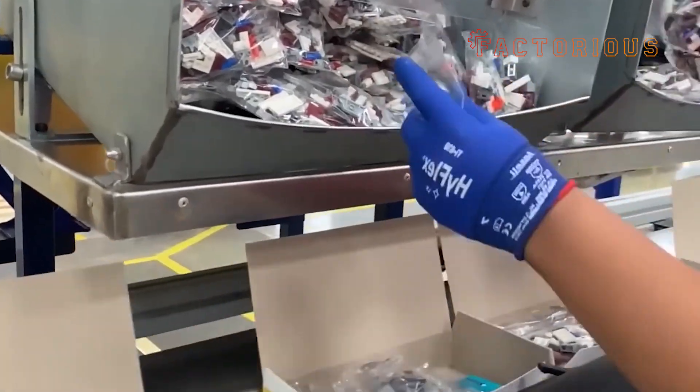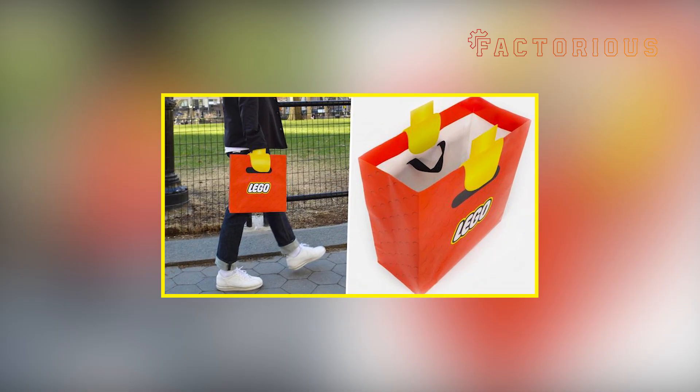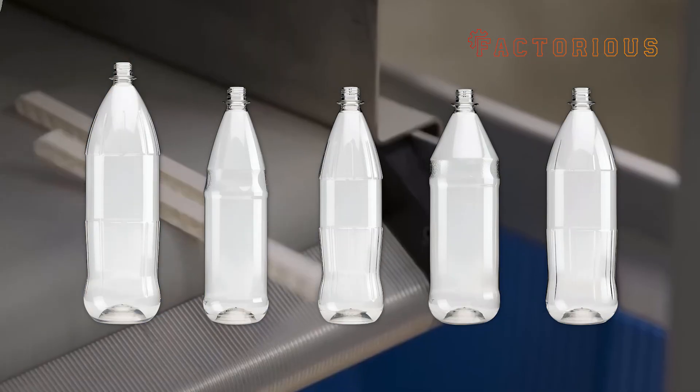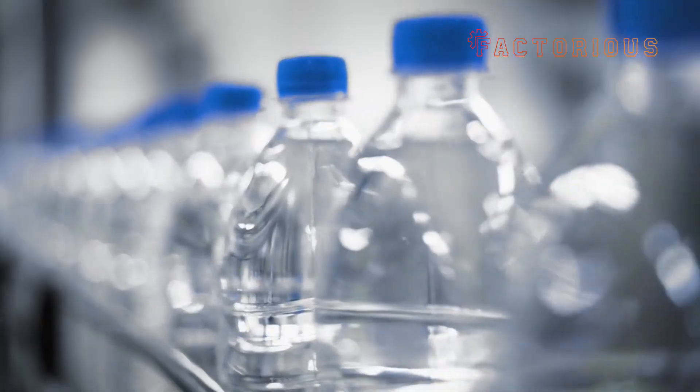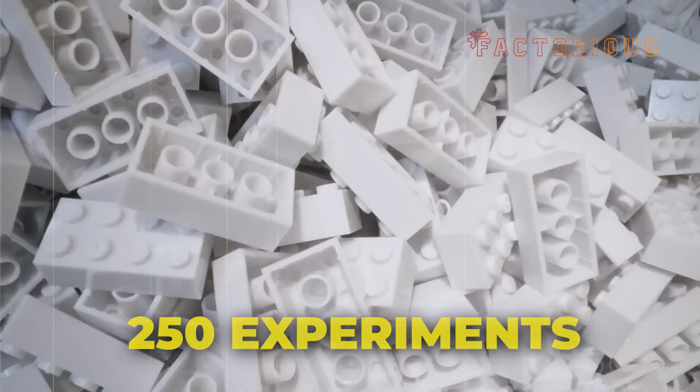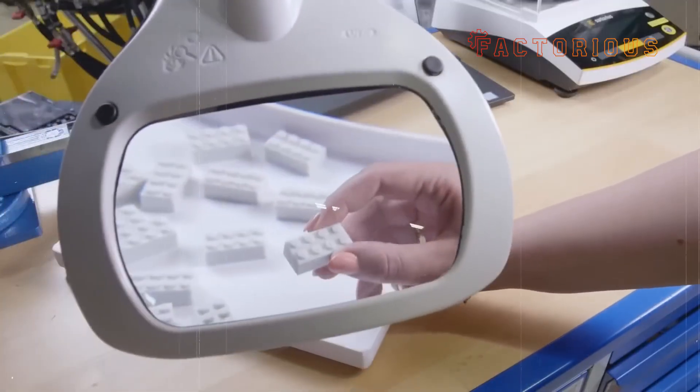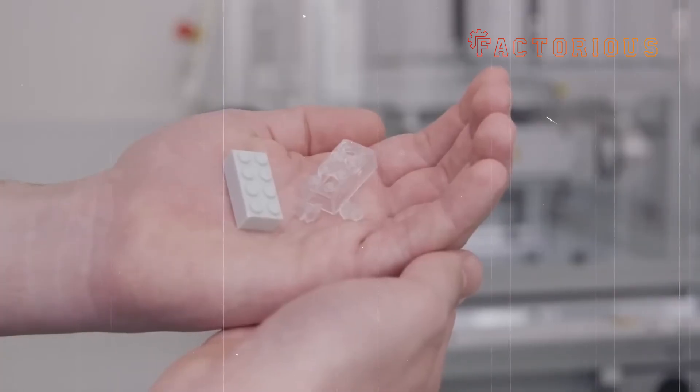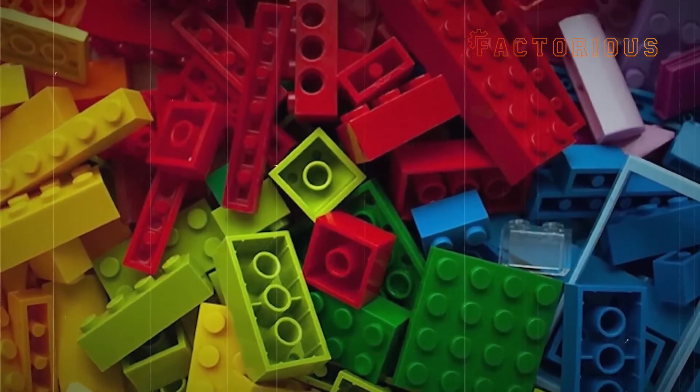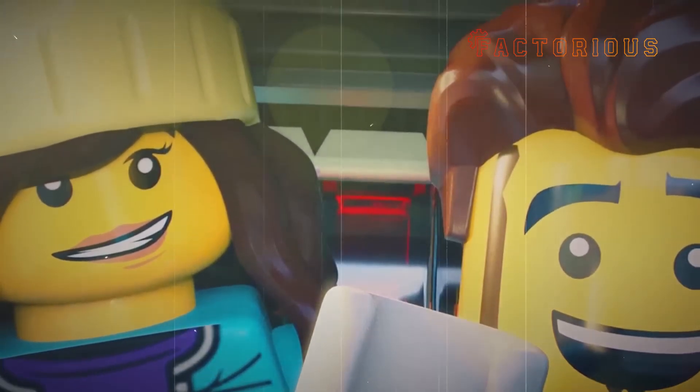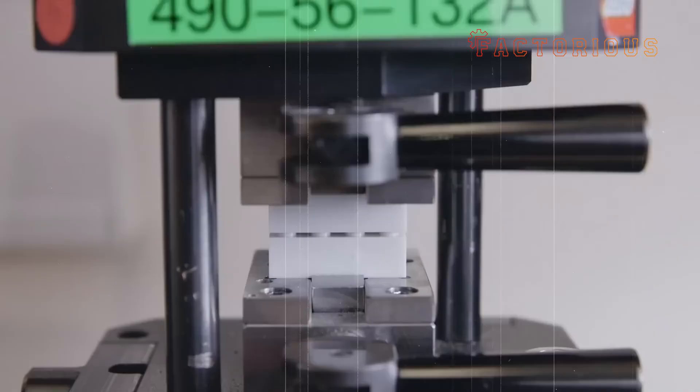Lego's also redesigning its packaging moving away from plastic bags to paper-based ones, which are easier to recycle. And in 2021, they unveiled a prototype brick made from recycled PET bottles, the same material used for water bottles. It took over 250 experiments and several years to get it right. The catch? They're still fine-tuning it to make sure it has that signature Lego feel. Sustainability isn't an easy path, especially when perfection is your baseline. But Lego's doing it brick by brick, quite literally.